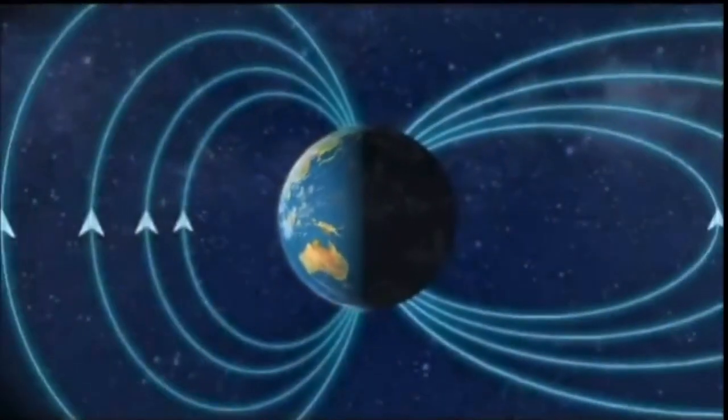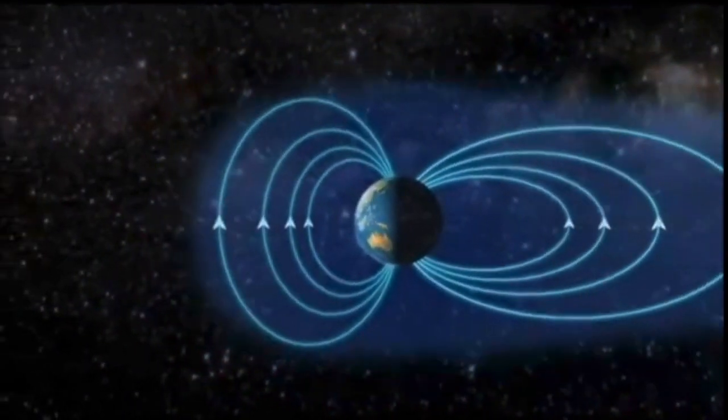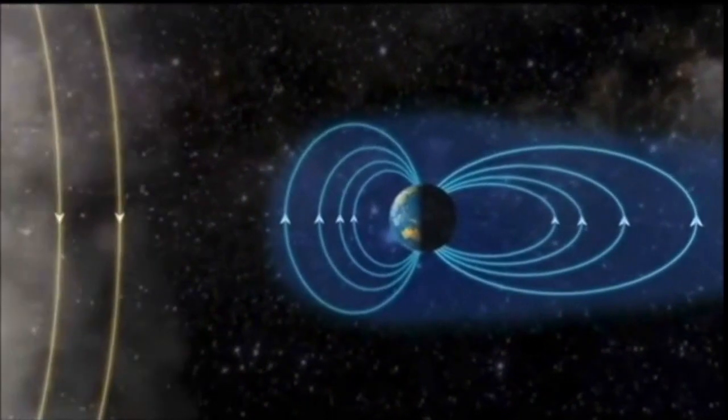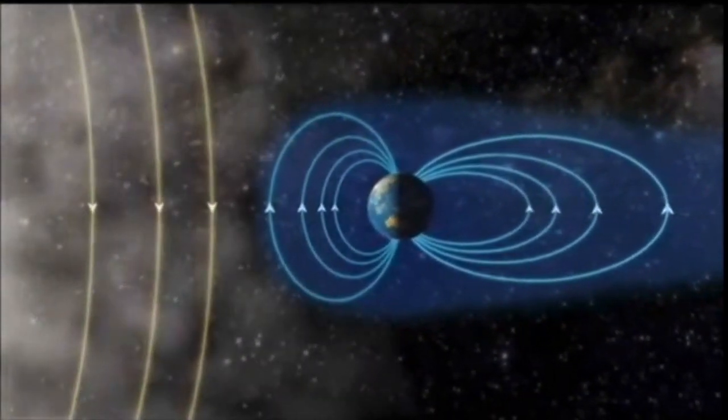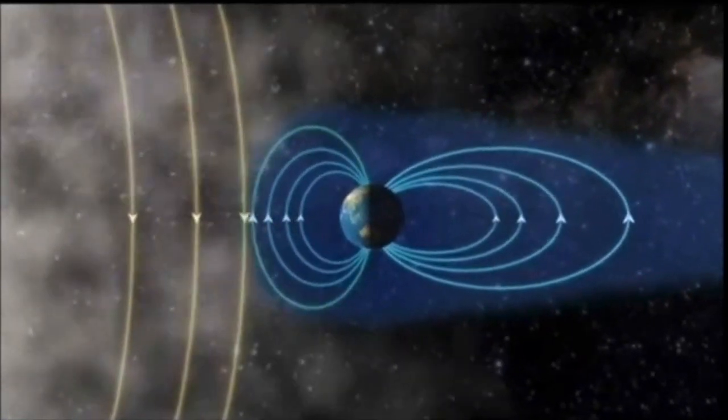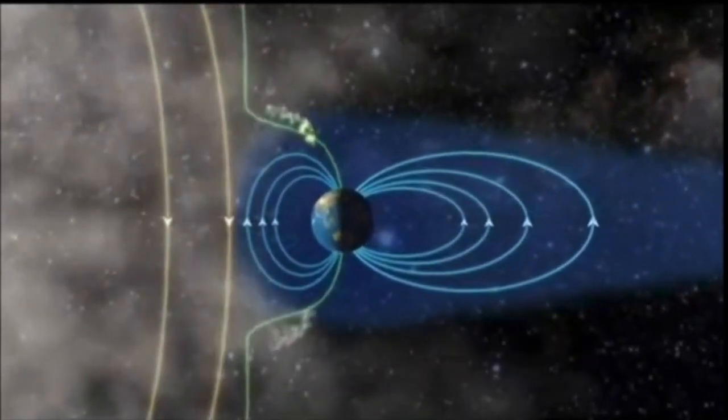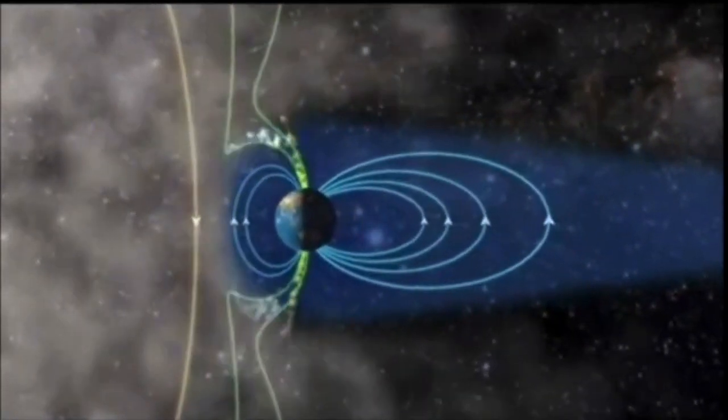Let's start with the Schumann resonance. You can think of the Schumann resonance as the heartbeat of the Earth in a sense, meaning the Earth has an ionosphere, which is a very complex interaction between the Earth's neutral atmosphere and the Sun's fully ionized, very charged particles.